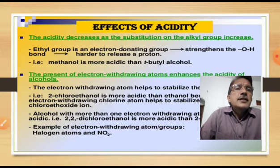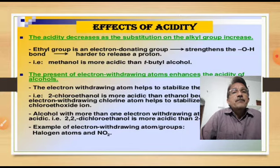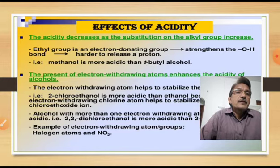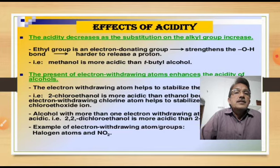The acidity decreases as substitution on the alkyl group increases. Ethyl group is an electron-donating group; it strengthens the O–H bond, making it harder to release the proton. Therefore, methanol is more acidic than tertiary butyl alcohol because methanol has only one alkyl group, whereas tertiary butyl alcohol has three alkyl groups. As the number of alkyl groups increases, acidity decreases.